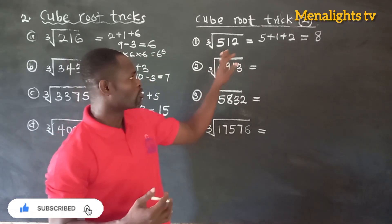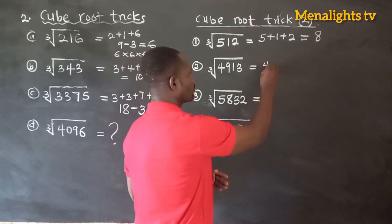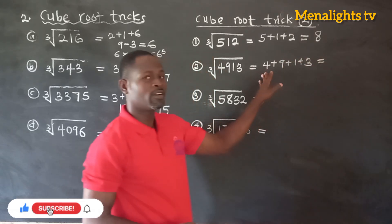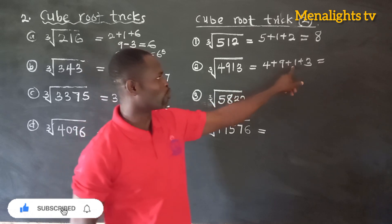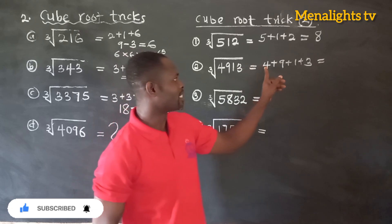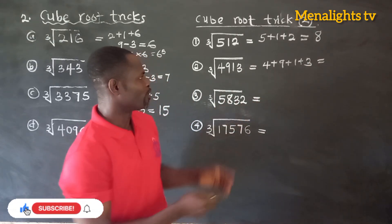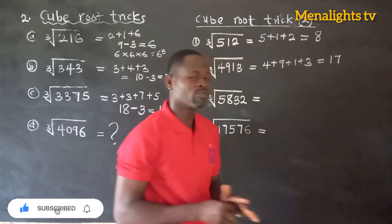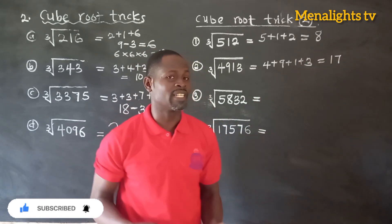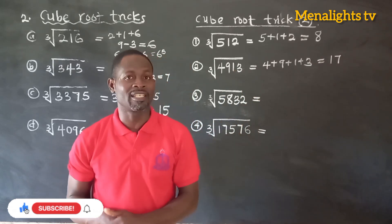Now the cube root of 4,913: we have 4 plus 9 plus 1 plus 3, which gives us 17. So the cube root of 4,913 is 17, meaning 17 times 17 times 17 gives us 4,913.